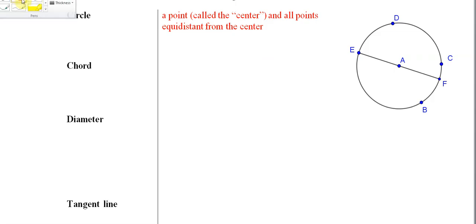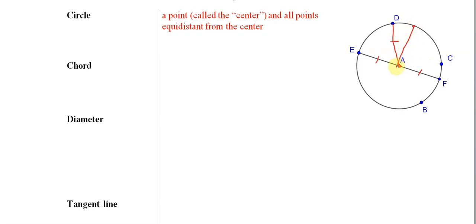In our example, our center is A, and every single point that is equidistant from A. So from A to D, whatever that length is, that's the same distance as from A to E, and from A to F — that's also the same distance. From A to any other point on this circle, if you draw a line, that's also equidistant. If you go around and find all the points that are equidistant from A and group them together, what you have is a circle.